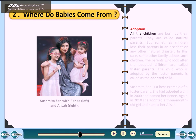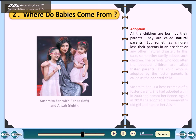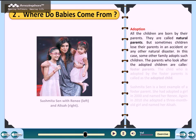Adoption: all children are born by their parents, who are called natural parents. But sometimes children lose their parents in an accident or any other natural disaster. In this case, some other family adopts such children. The parents who look after adopted children are called foster parents, and the child adopted by them is called the adopted child.